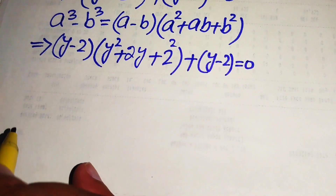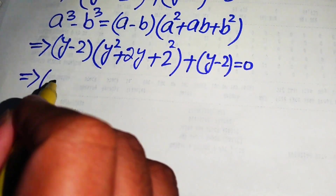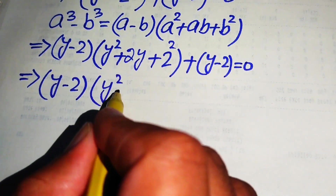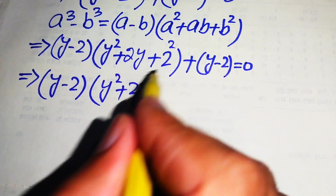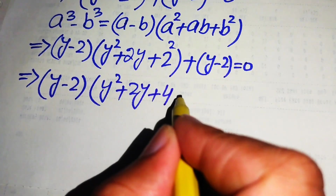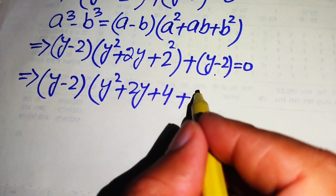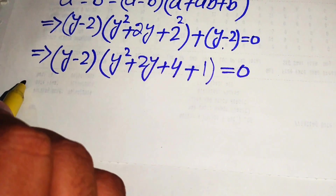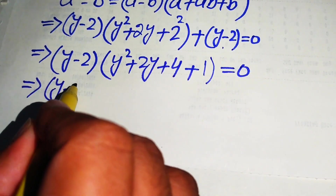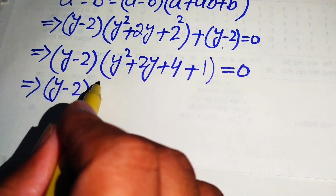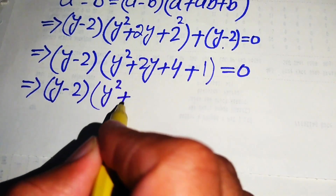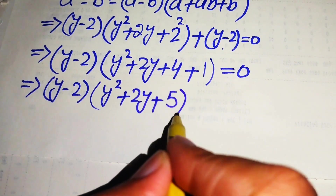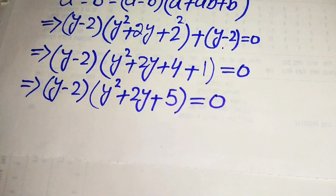Now we see that y minus 2 is a common factor, so we take it common. The remaining terms are y squared plus 2y plus 4, and from the second group we get plus 1, all times y minus 2, equals 0. Simplifying, this becomes y minus 2 times y squared plus 2y plus 5 equals 0.